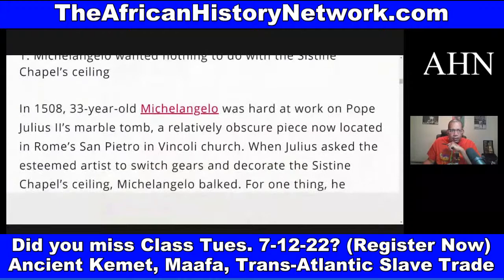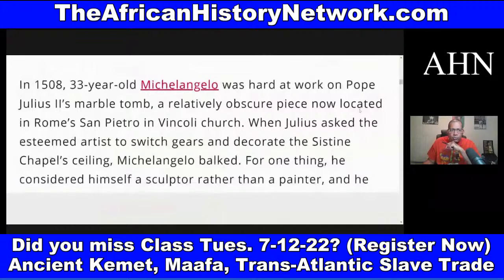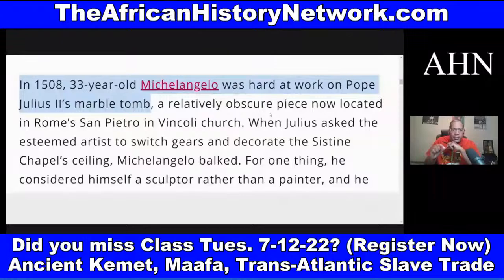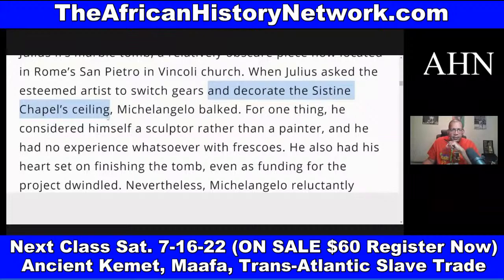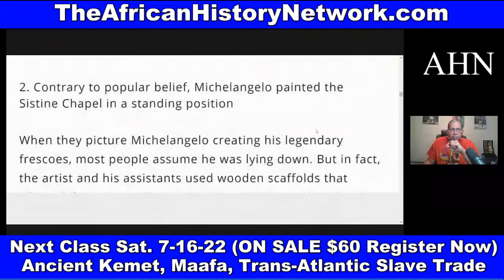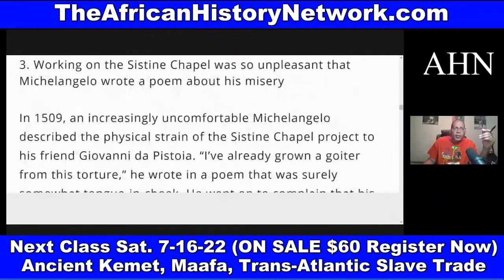In 1508, 33-year-old Michelangelo was hard at work on Pope Julius II's marble tomb, a relatively obscure piece now located in Rome's San Pietro in Vincoli Church. When Pope Julius II asked him to switch gears and decorate the Sistine Chapel ceiling, Michelangelo balked. For one thing, he considered himself a sculptor rather than a painter, and he had no experience whatsoever with frescoes. Contrary to popular belief, Michelangelo painted the Sistine Chapel in a standing position. Working on it was so unpleasant that he wrote a poem about his misery in 1509.